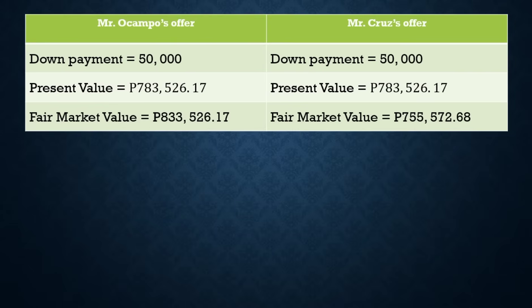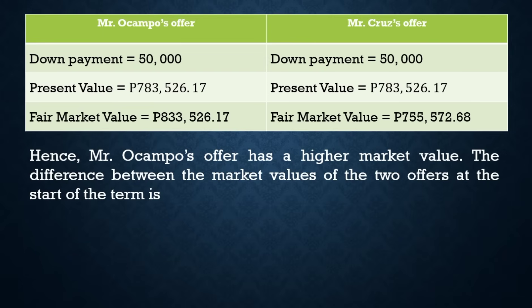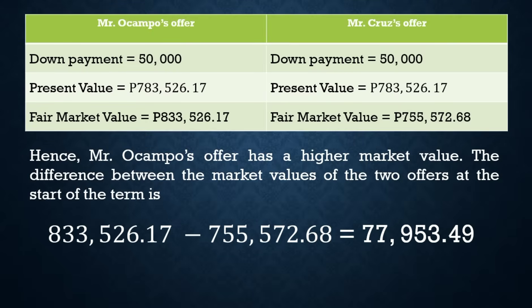Comparing both offers: Mr. Ocampo's fair market value is 833,526.17 and Mr. Cruz's is 755,572.68. Mr. Ocampo's offer has a higher market value. The difference between the market values of the two offers is 77,953.49, which is quite large — so Mr. Ribaya should choose Mr. Ocampo's offer.